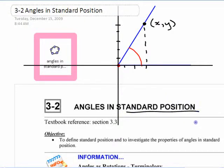Standard position means putting it so the angle starts on the positive x-axis and then is rotated around this way if the angle's positive, and this way if the angle's negative.